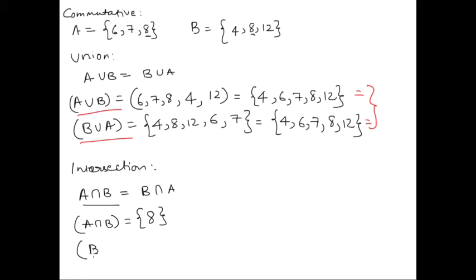And if you do B intersection A, same thing, you put B and A below each other and see what the common elements are. Again there's no change there, so it is still 8. We see that it's the same again, right? So this means,